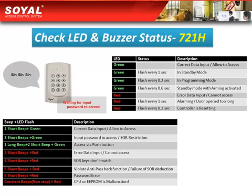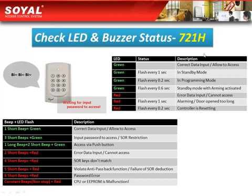In this section, we will learn all the LED status of the 721H. Our controller 721H shows two colors of LED light: green and red. The green light means correct data input and access is allowed. However, the status of the controller differs depending on how many seconds the green light strobes or flashes.